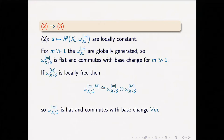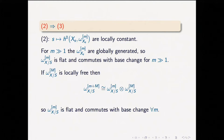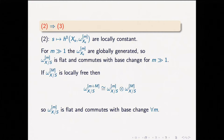If I'm at a fiber, some power of omega_{X/S} — say the capital-M-th power — will be locally free. If it's flat and commutes with base change, then the relative omega_{X/S}^M also has to be locally free near that fiber. Once I know that's locally free, there is an isomorphism: the (M+m)-th power is the same as the M-th power times the m-th power. So if I know this for sufficiently large M, I know it for lower values as well.